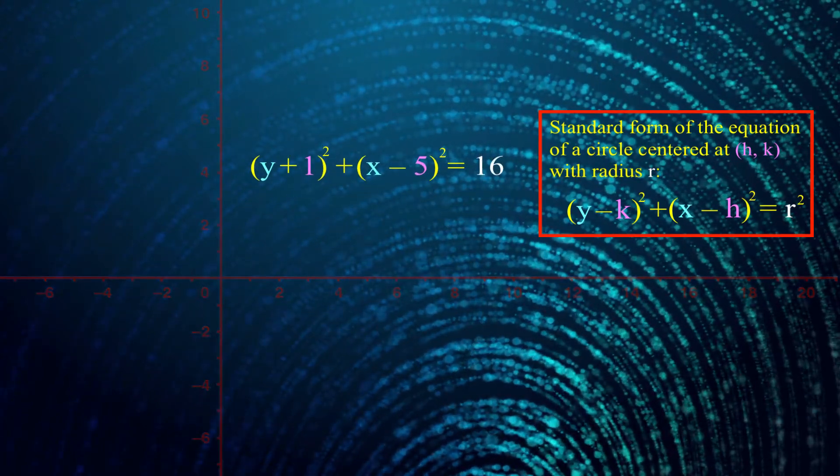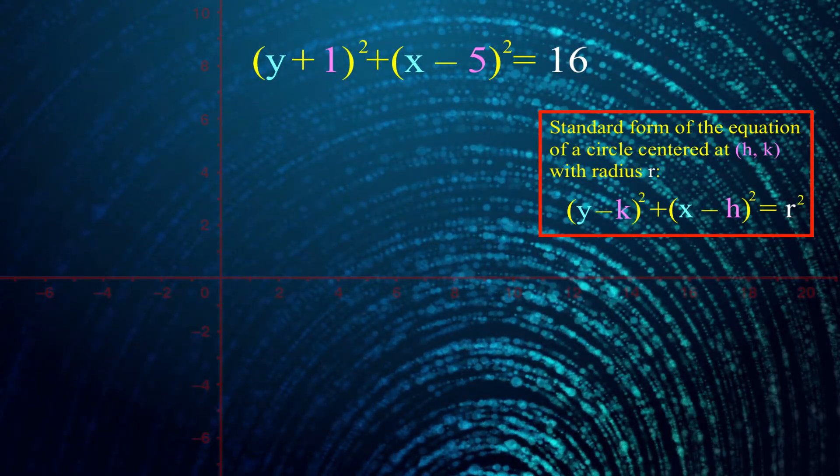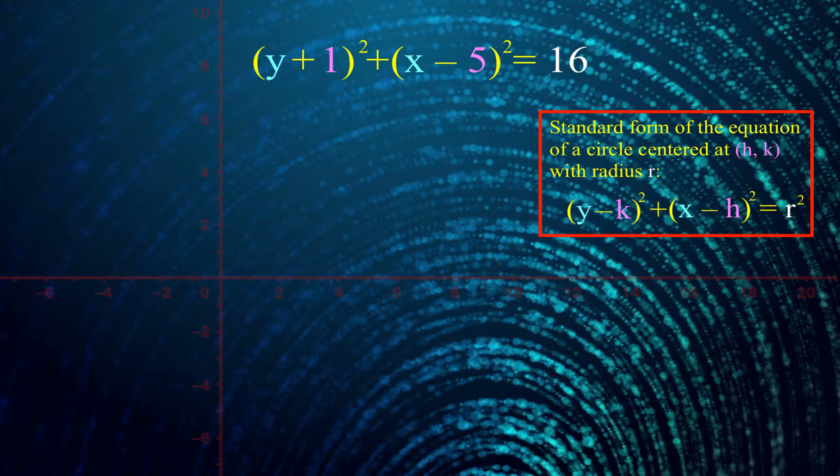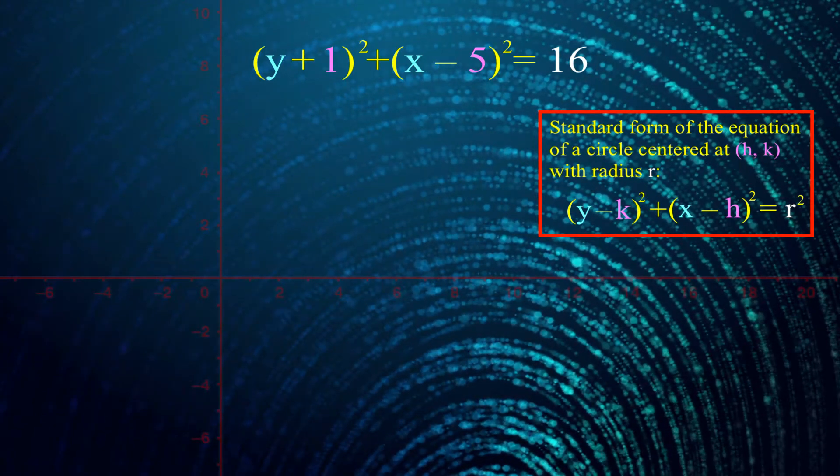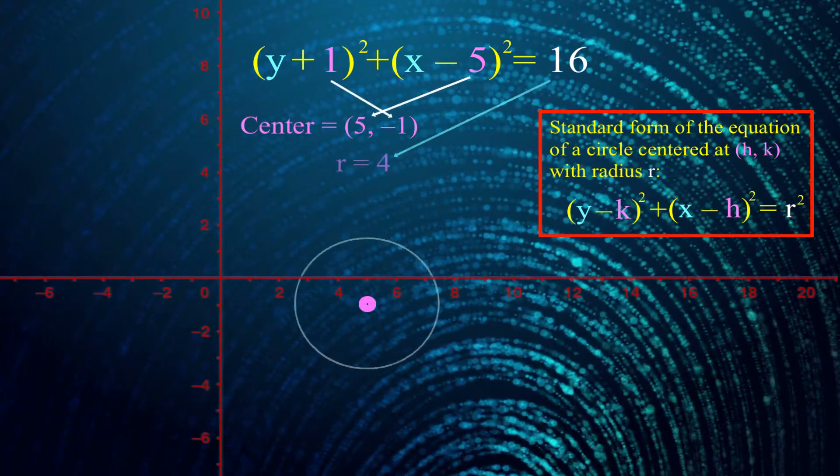In this video, we're just going in reverse. I'm going to start you out with the equation, and I'm going to ask you to draw the circle. That sounds really easy. As long as I remember where all the pieces go in my standard form, I can look at it and just visually figure out where the center is and what the radius is.